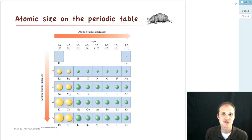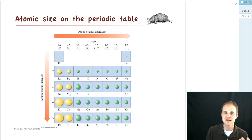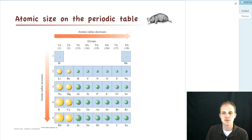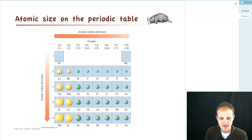Our last topic for this chapter about atoms and elements is talking about a couple of periodic trends. What do we mean by periodic trends? It means things that happen as we go across the periodic table — what happens to size, what happens to other things. So we're first going to talk about size.